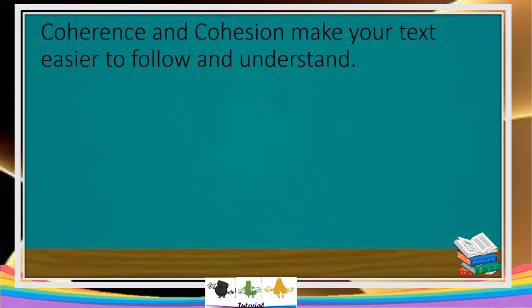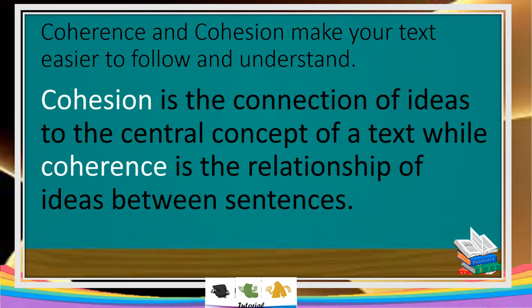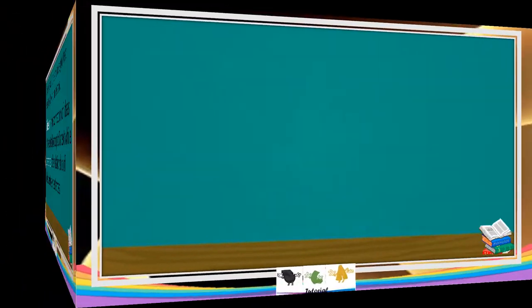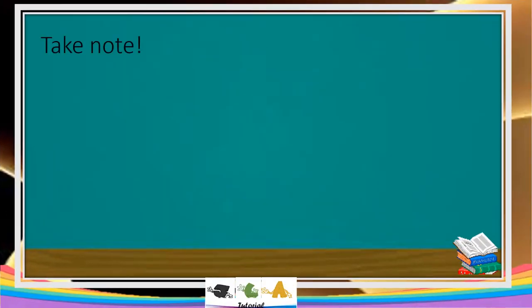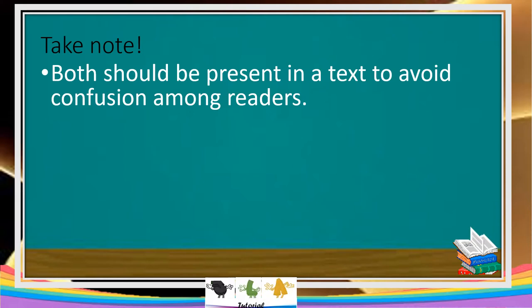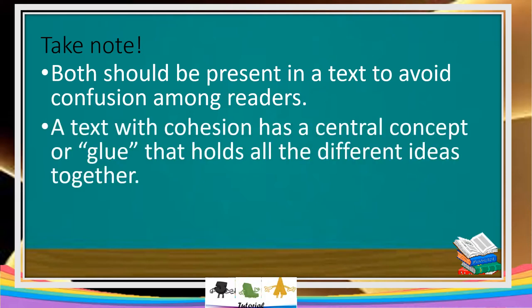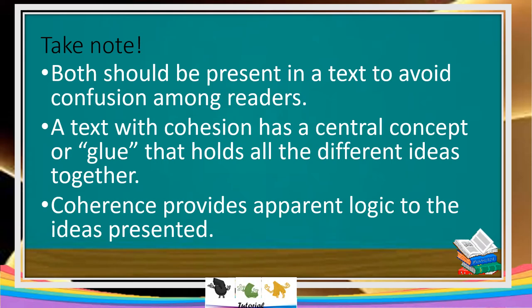Then we proceed to coherence and cohesion. Coherence and cohesion make your text easier to follow and understand. Cohesion is the connection of ideas to the central concept of a text, while coherence is the relationship of ideas between sentences. Always take note: both should be present in a text to avoid confusion among readers. Cohesion and coherence should go together.